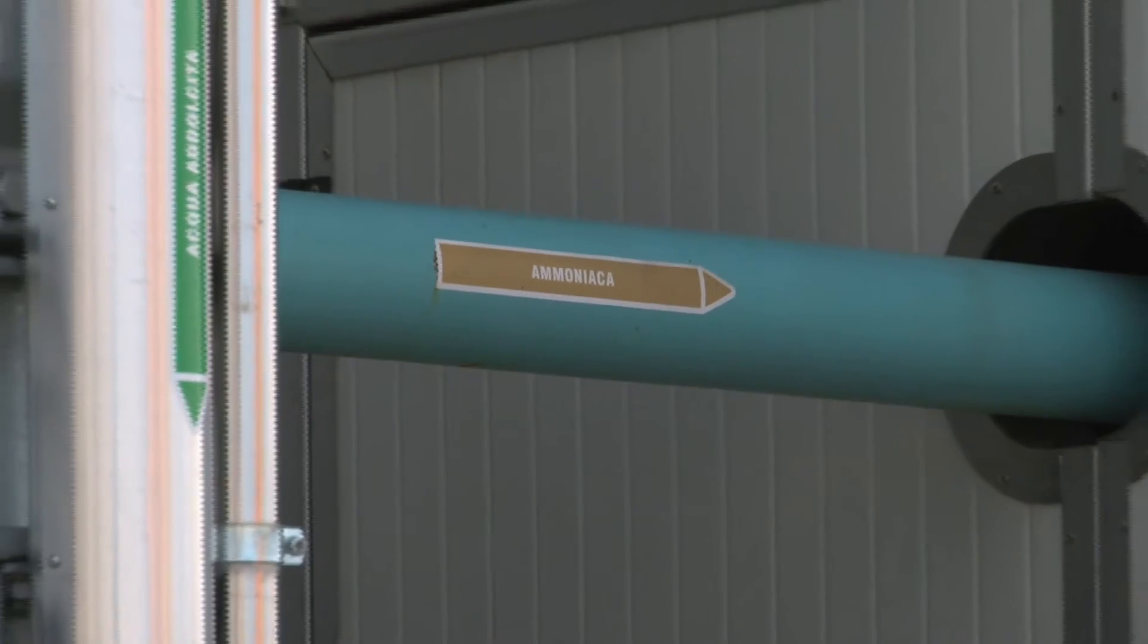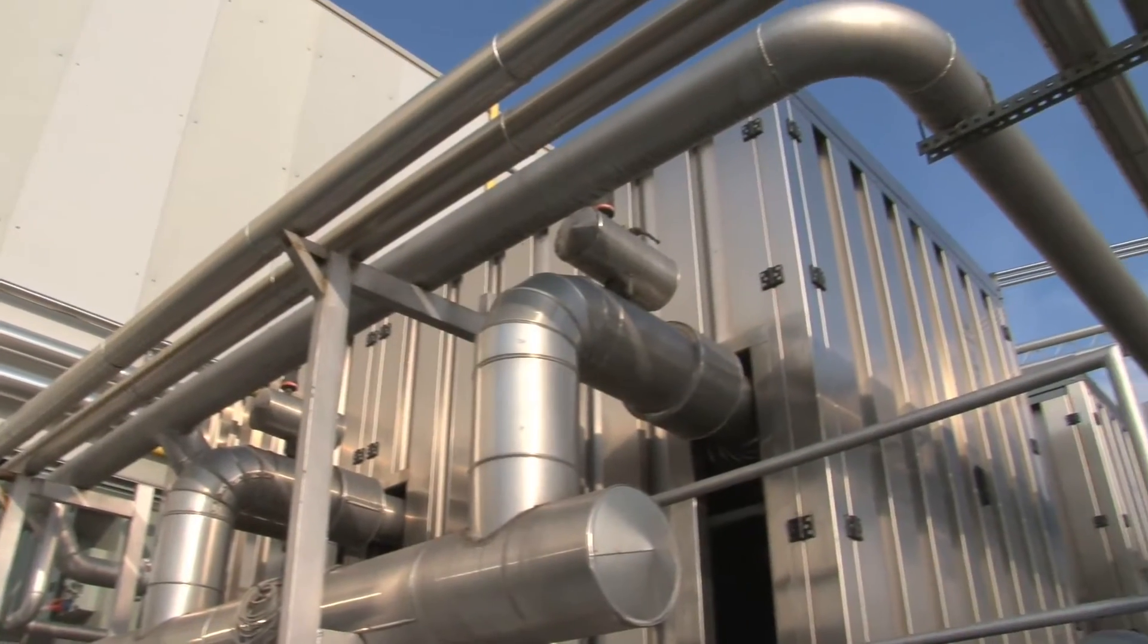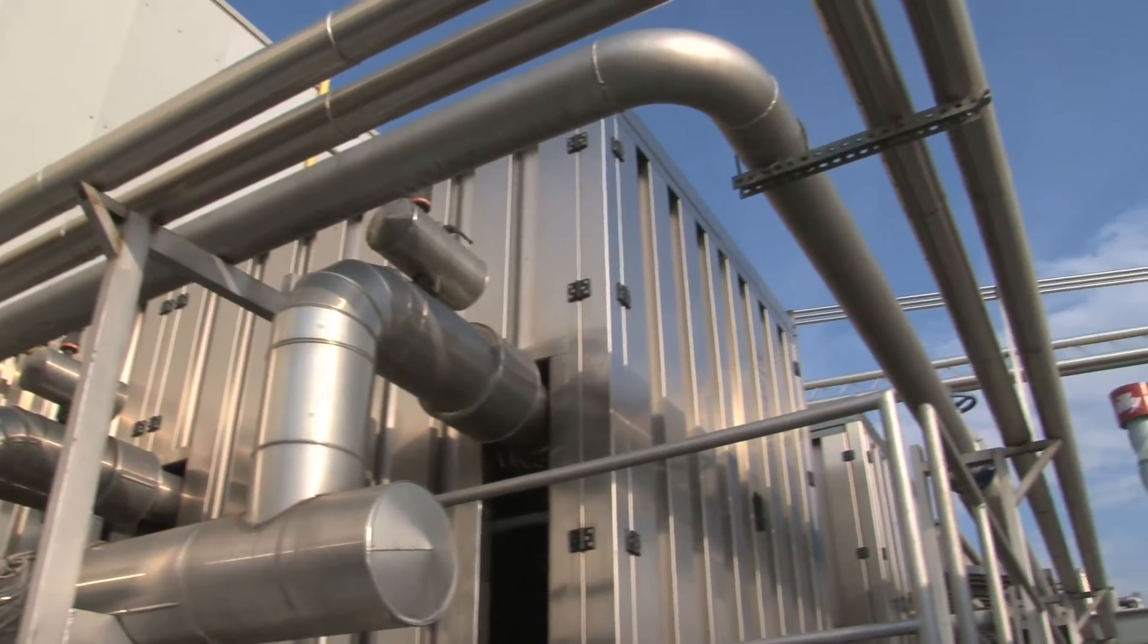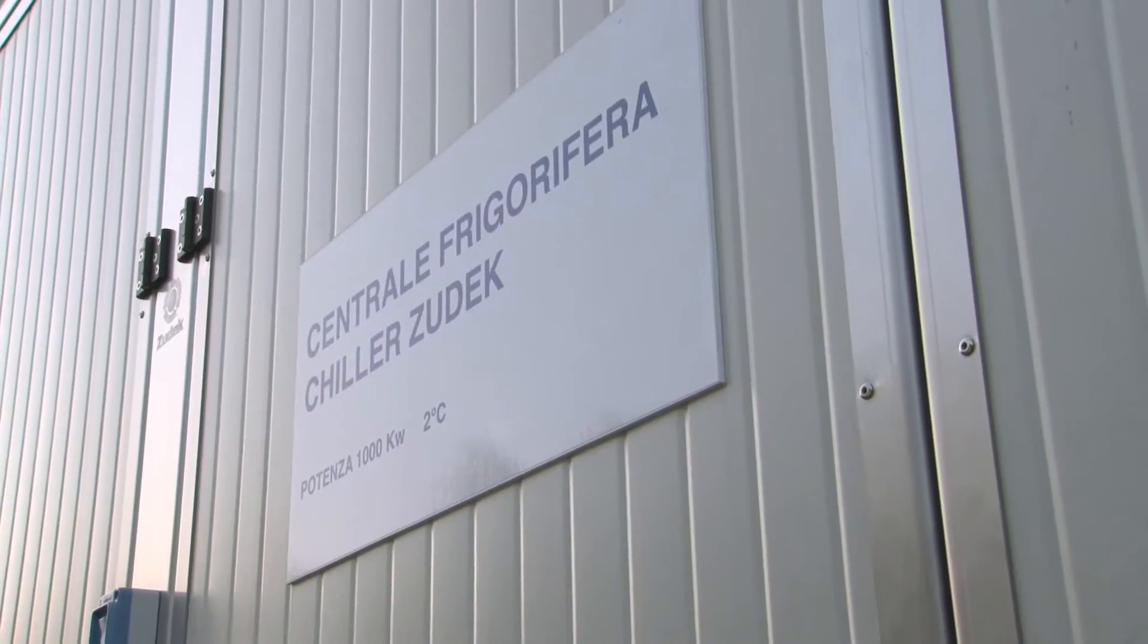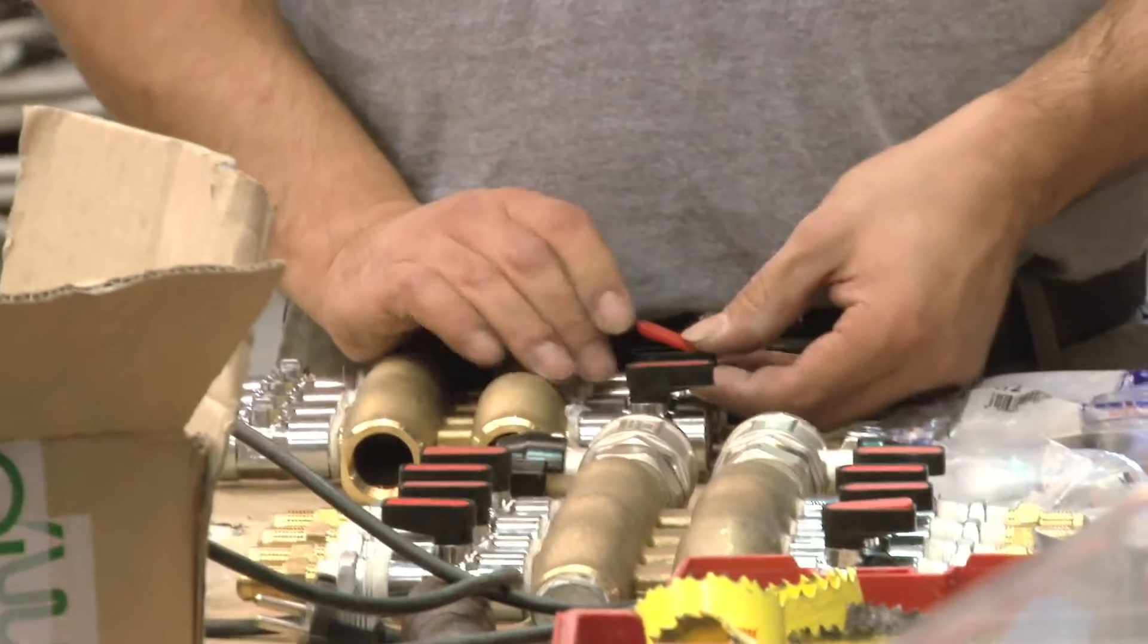Ammonia is a gas present in large quantities in nature, available at low cost and used in industrial processes. Zudeck uses it to make refrigerating plants in every kind of environment.